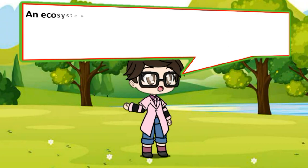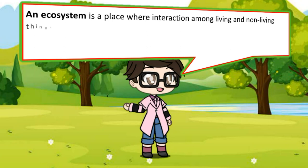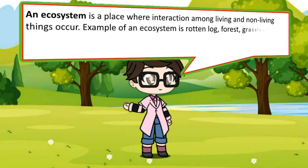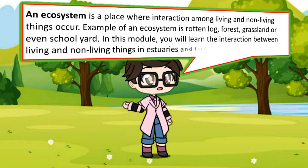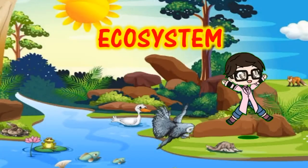An ecosystem is a place where interaction among living and non-living things occur. Examples of an ecosystem are rotten log, forest, grassland, and even schoolyard. In this module, you will learn the interaction between living and non-living things in estuaries and intertidal zones.